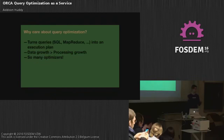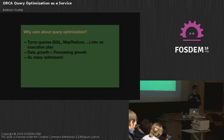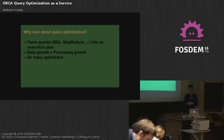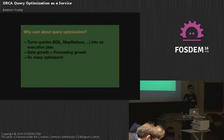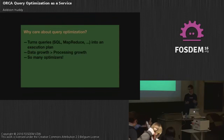Why do we even want to care about query optimization? Query optimization is really simple: it takes an expression of a query — that can be a SQL query, a MapReduce context, whatever — and it turns it into an execution plan: how should the data be fetched and an answer computed? The problem is that the rate at which data is growing is way bigger than our ability to process it. So we need to use what we have today to process data as efficiently as possible. That's where query optimization comes in.